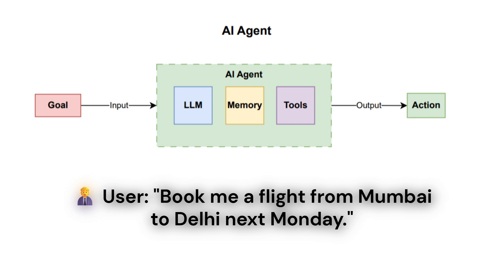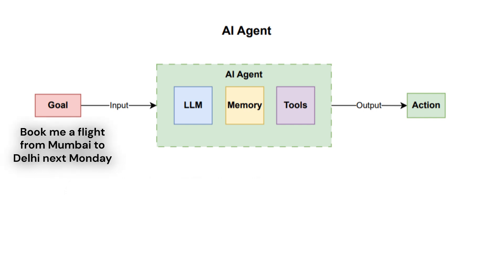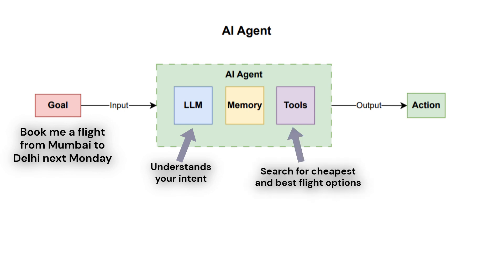Let's see an example. The user has a goal to book a flight ticket from Mumbai to Delhi, so the user prompts: 'Book me a flight from Mumbai to Delhi next Monday.' The AI agent understands the intent through the LLM, identifies the source city as Mumbai and destination as Delhi, then uses a tool — an API integration — to search for flights. It then chooses the cheapest or best option through decision-making via the LLM.